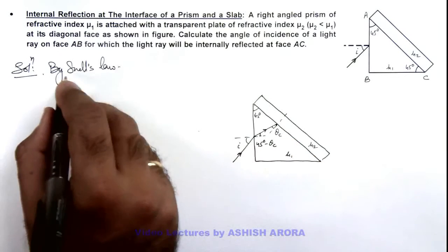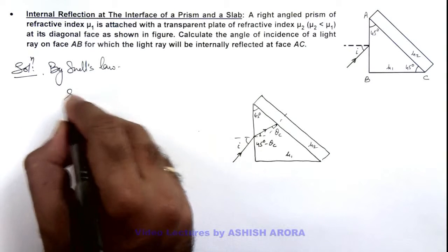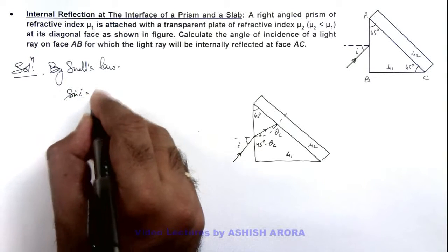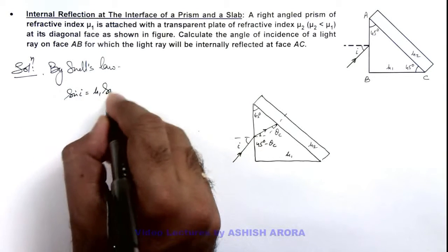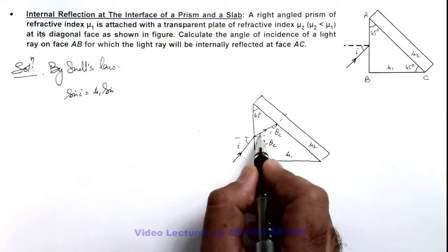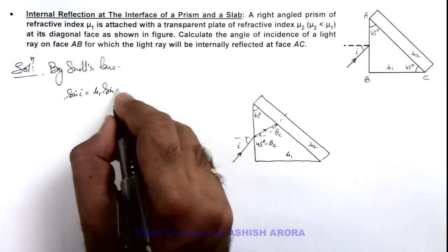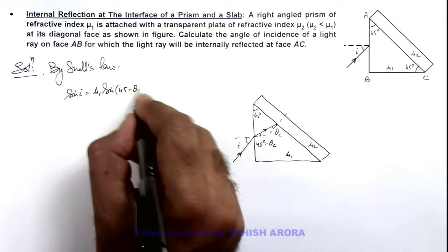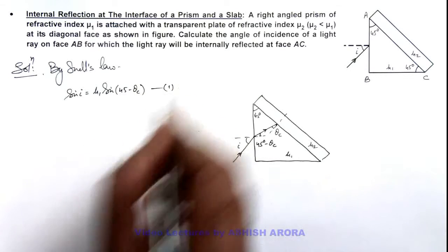So in this situation, by Snell's law we can write here: sin i equals μ₁ sin θ, where the angle of refraction here can be written as 45 minus θc. Say this is our equation 1.